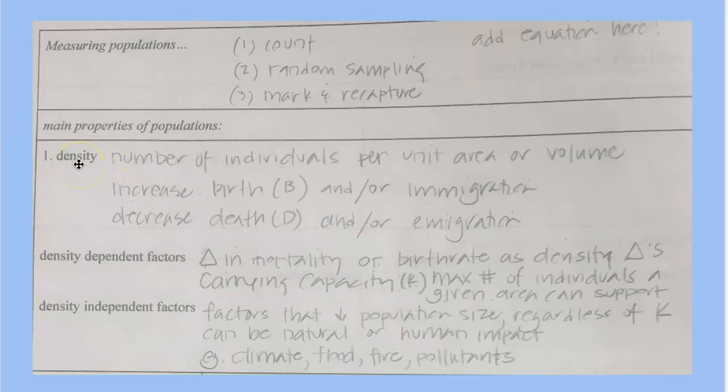And you know what density means. It's just the number of individuals or number of things per unit area. And in this particular case, we're looking at population density. So it's the number of individuals or particular species or a particular population in a given area.